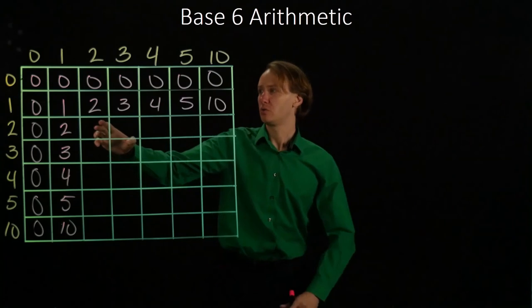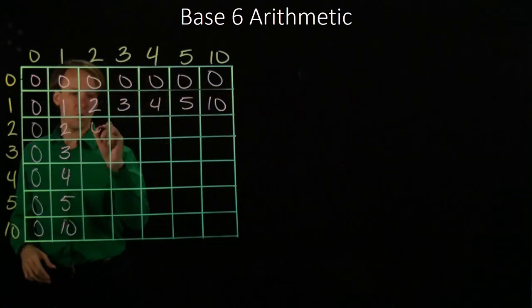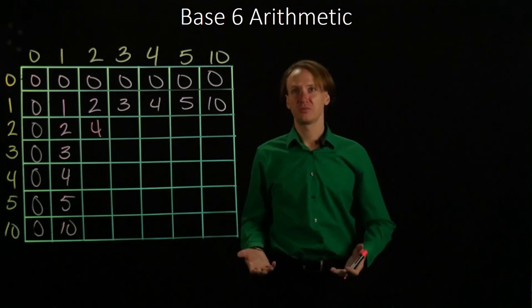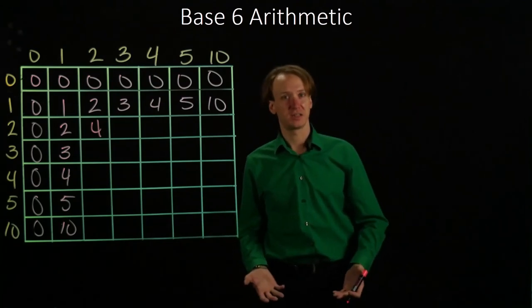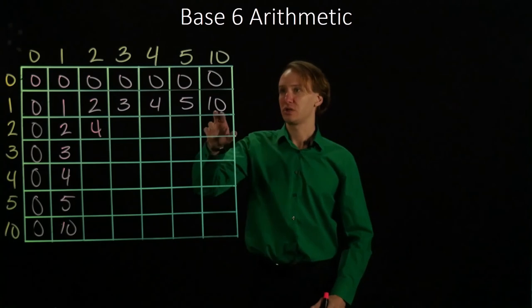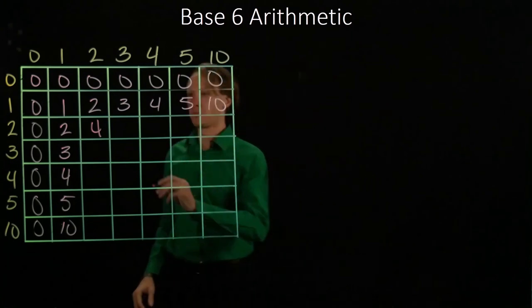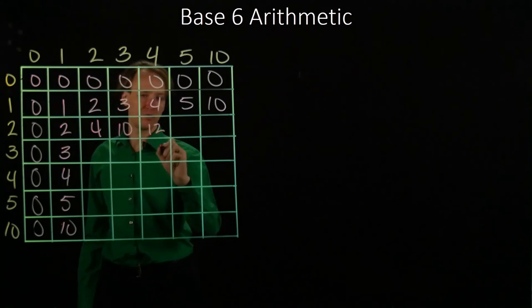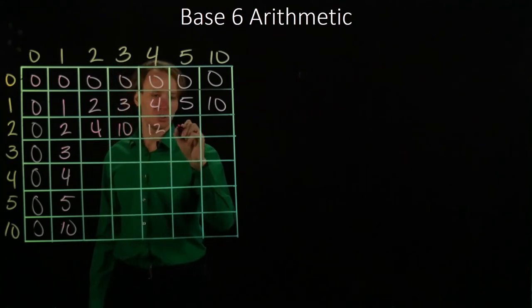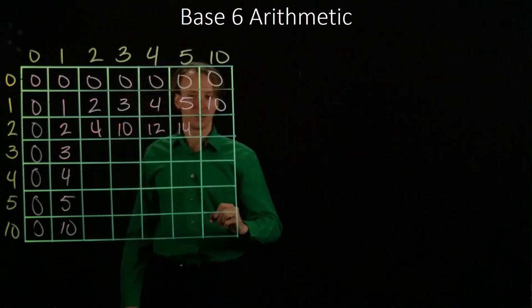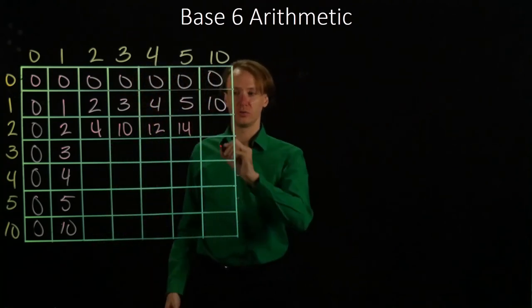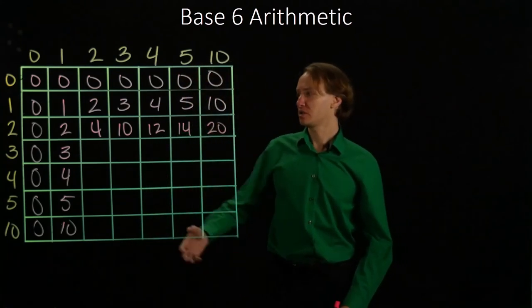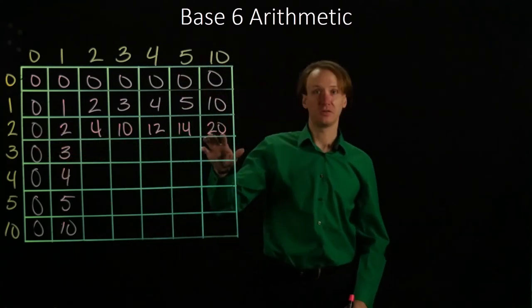2 plus 2 will give me 4, but 4 plus 2 doesn't give me 6 because I don't have any 6's in base 6. 6 is actually 10. So I get 10 there. 10 plus 2 is 12, 12 plus 2 is 14, and 14 plus 2 will give me 20. So rather like you would expect, 2 times 10 gives me 20.